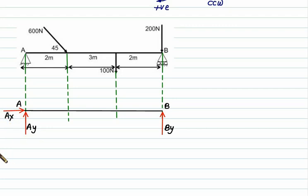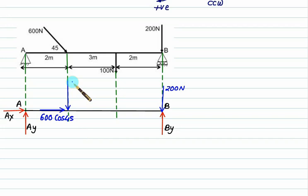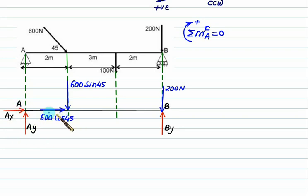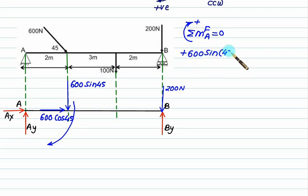Ax is along the x-direction, Ay is along the y-direction. The 200 N vertical force is at point B. The 600 N force makes an angle of 45 degrees with the horizontal, so the horizontal component is 600 cos 45 and the vertical component is 600 sin 45. We also have a 100 N force downward at point C. Now take the moment about fixed support A equal to zero. Ax, Ay, and 600 cos 45 all pass through point A and make no moment.